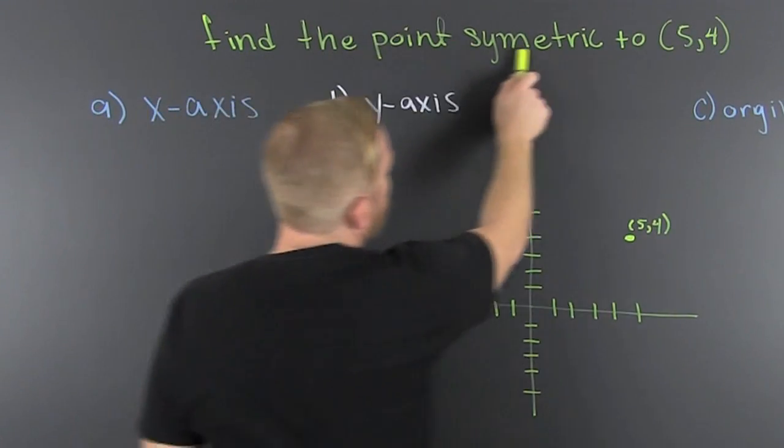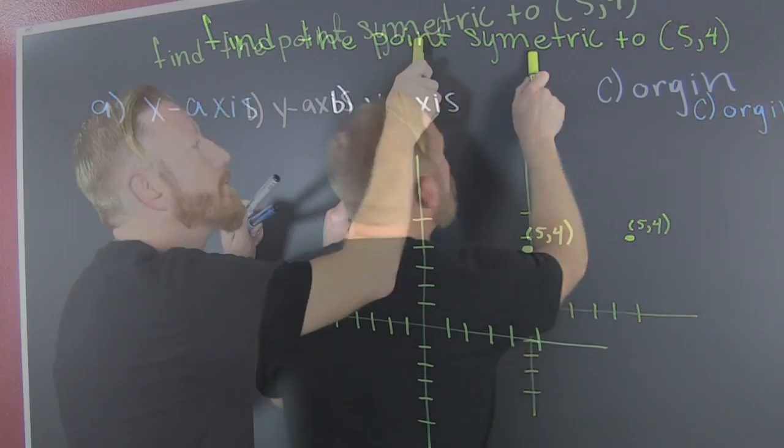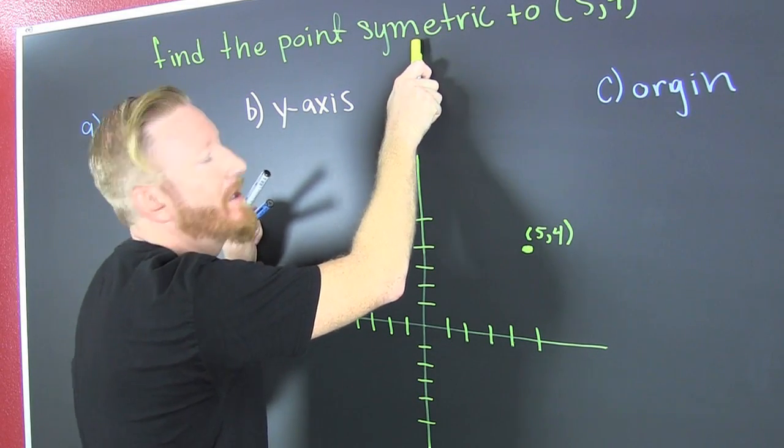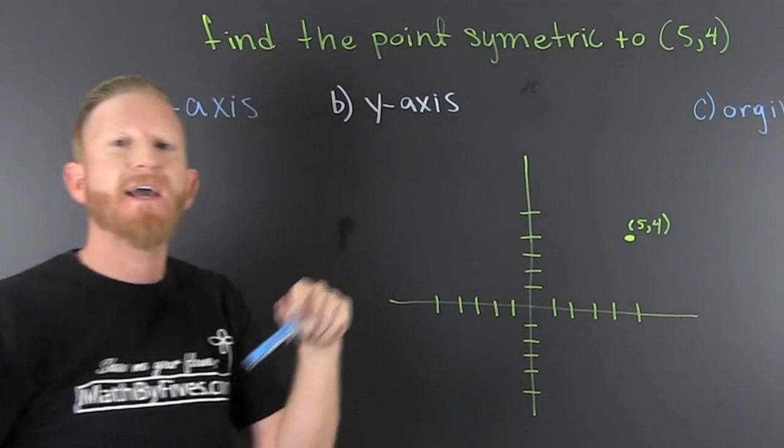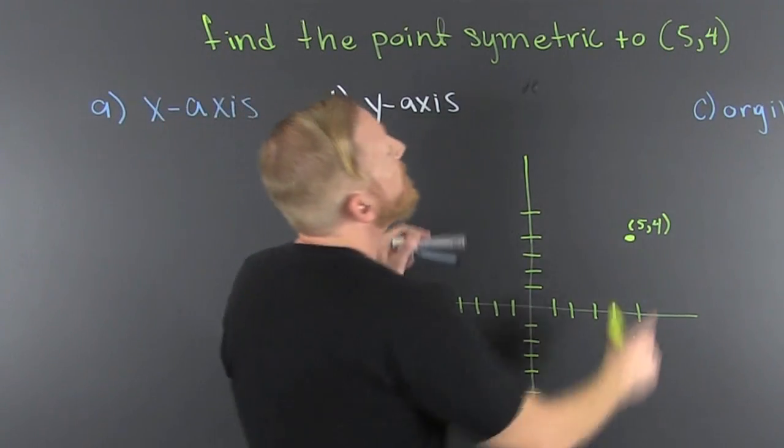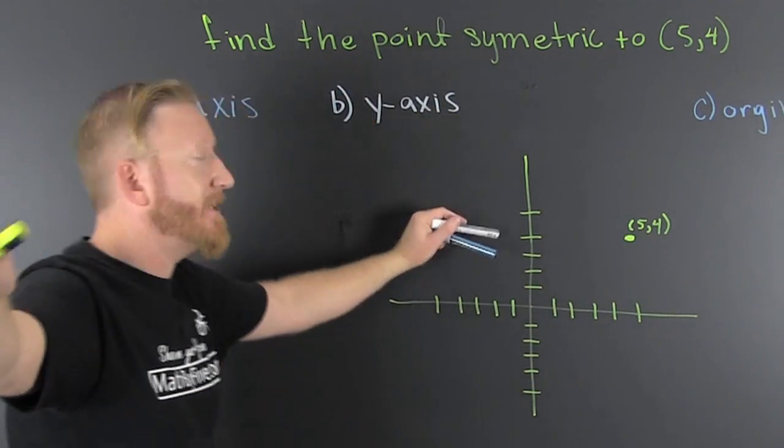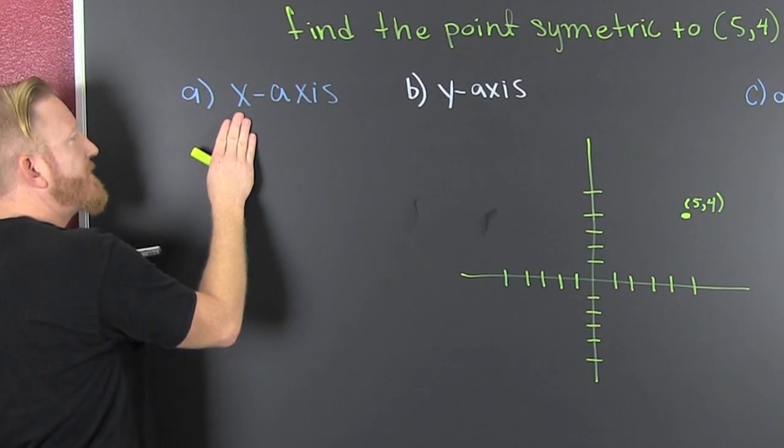We have the point, boom, and we're trying to... whoa, is there two M's in Symmetric? I'm not sure. We're talking about reflections of the point (5, 4). First, we want to see the x-axis symmetry.